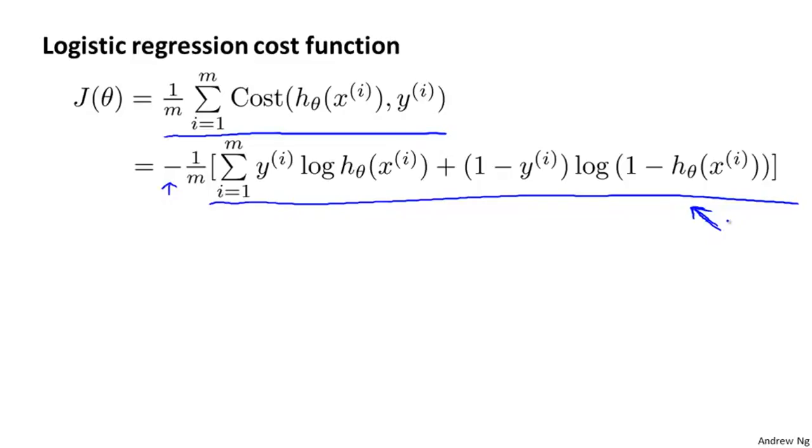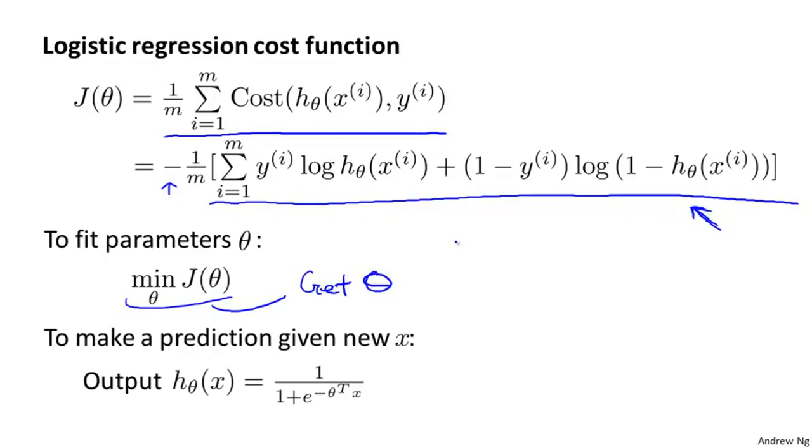Given this cost function, in order to fit the parameters, what we're going to do is try to find the parameters theta that minimize J of theta. So if we try to minimize this, this would give us some set of parameters theta. Finally, if we're given a new example with some set of features x, we can then take the thetas that we fit to our training set and output our prediction as this.